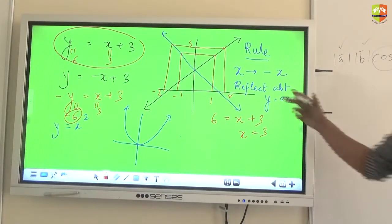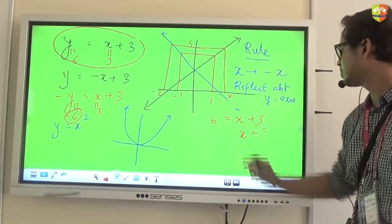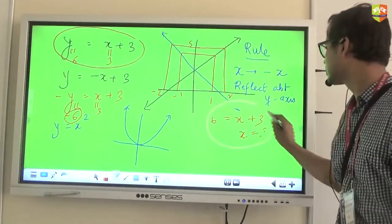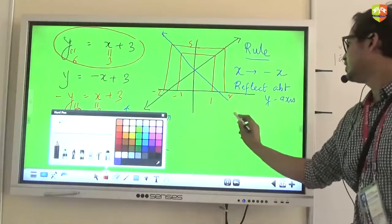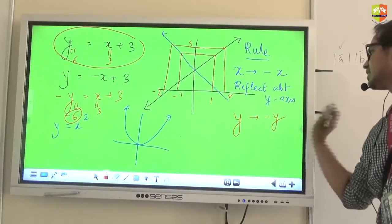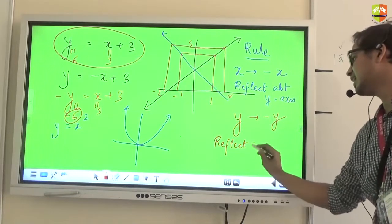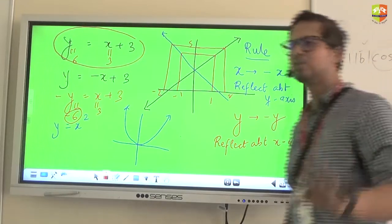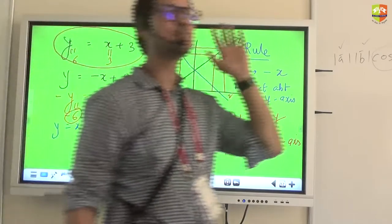So rule number 2 in the same thing is, when you change your Y with minus Y, you actually reflect the graph about X axis. It is very simple rule. Change of sign of X, reflection about Y axis. Change of sign of Y, reflection about X axis. Is the rule clear?